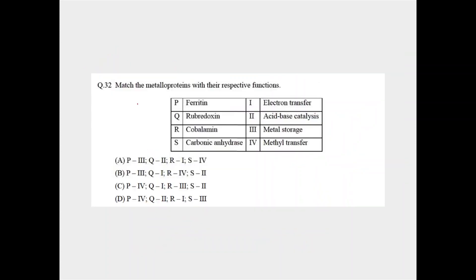So now coming back to the question, we know that ferritin is metal storage protein, rubridoxin's function is electron transfer, cobalamin is used for methyl transfer, and carbonic anhydrase is used for acid-base catalysis. So ferritin, option number 3, that is P should be 3, these two are cancelled.